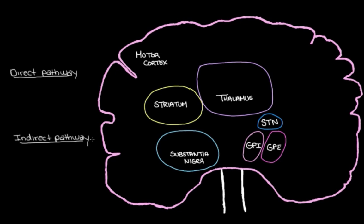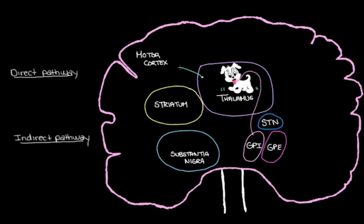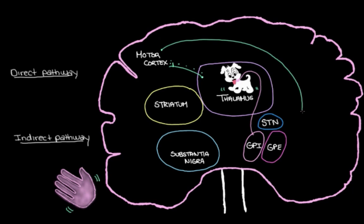So I like to think of the thalamus as a dog, a dog on a leash. And it needs to be on a leash because we don't want it getting all excited. Because when the thalamus gets all excited, it causes our motor cortex to get too excited. And this causes our muscles to move too much, too much movement. Because remember, our motor cortex is what talks to our muscles to get them to move.